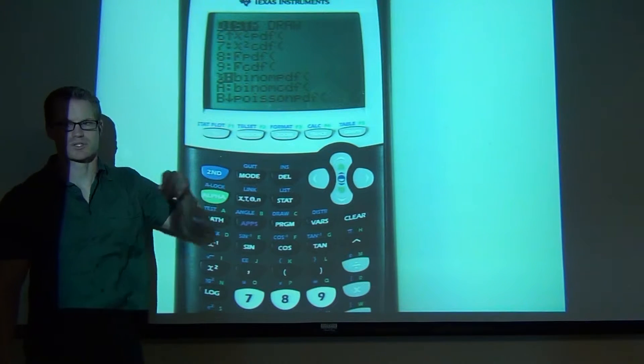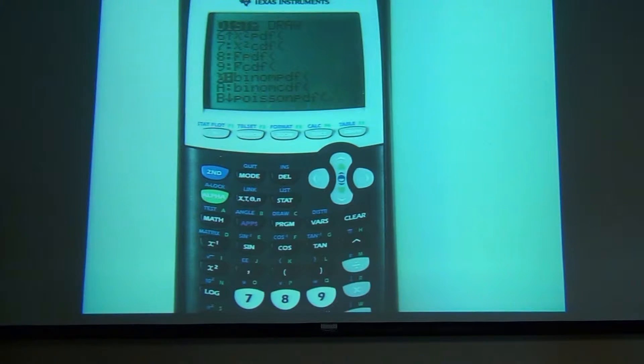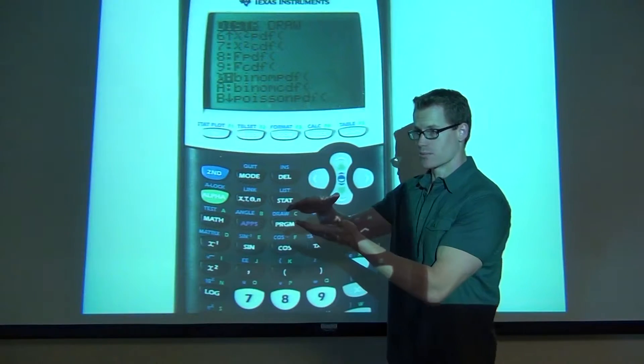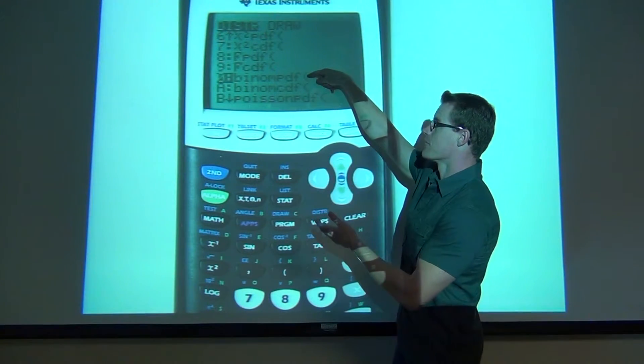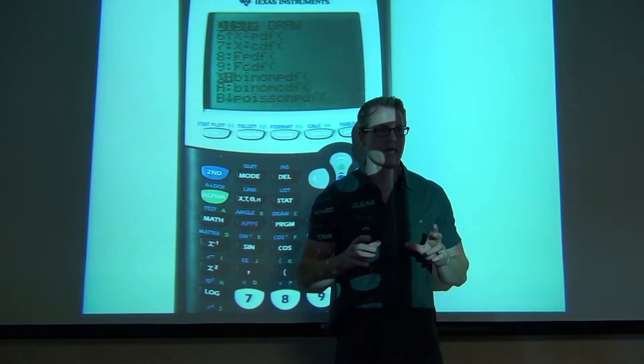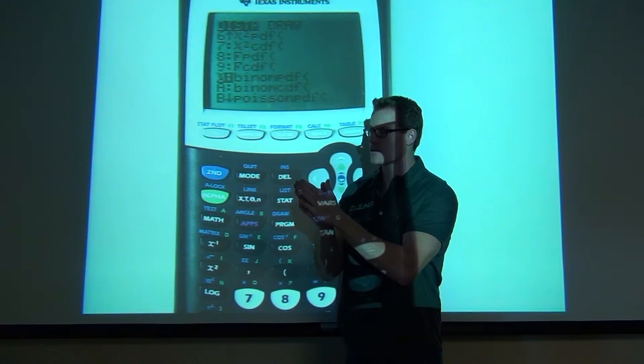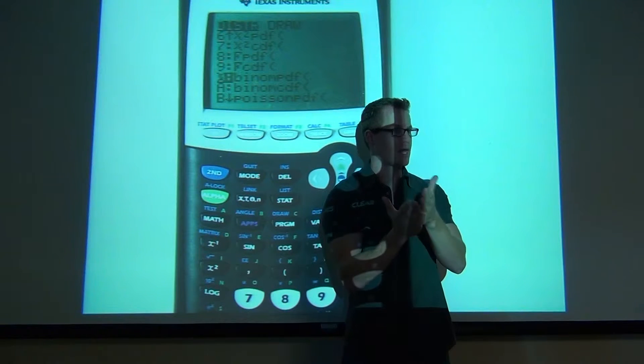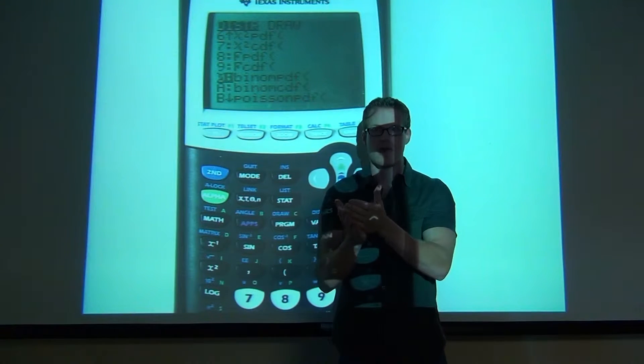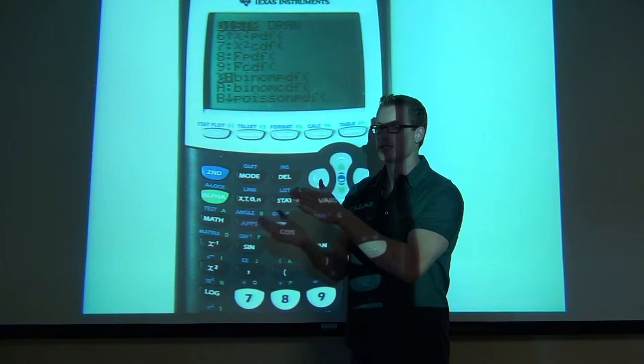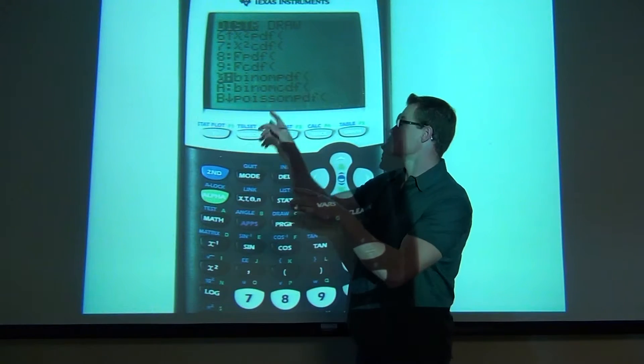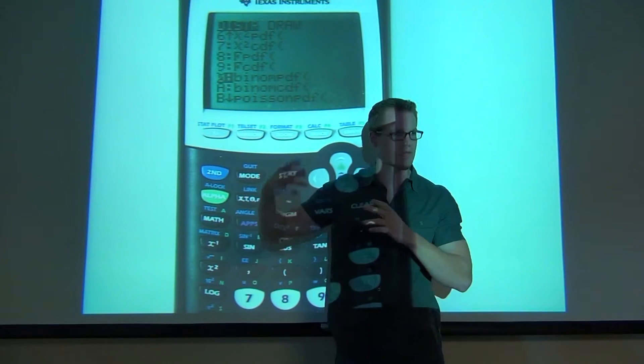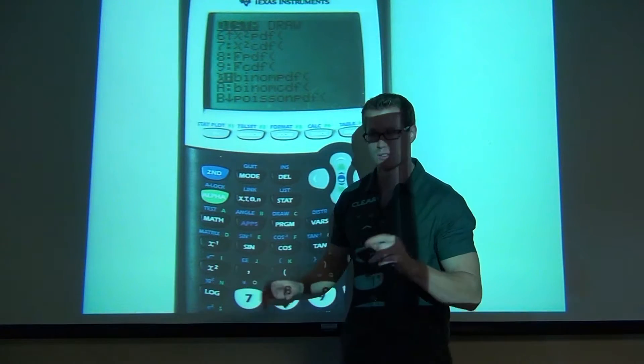This is a point probability. This is a cumulative probability. Here's how this works. If you want to find out an exact value, an exact number of successes, that's considered a point probability, that's your PDF. If you want to find out up to and including something, that's cumulative.